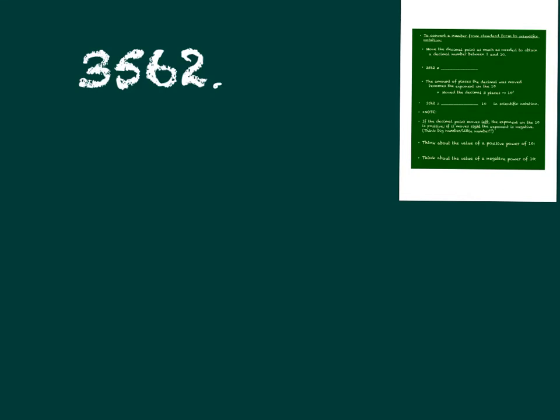So in order to write this in scientific notation we're allowed one number in front of the decimal place, only one. Right now we have 4. So we want to move this decimal from the 2 all the way over to between the 3 and the 5. And that is going to create a value that is between 1 and 10 in front of our decimal place. So we know we've moved the decimal 3 spots. That's going to give us our times 10 to the third power.